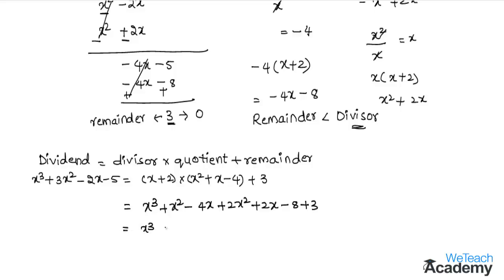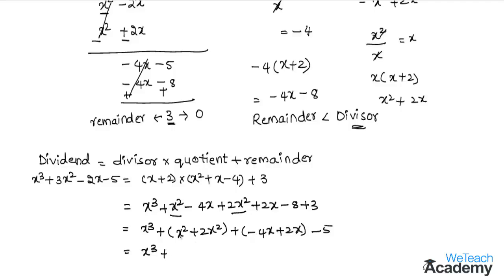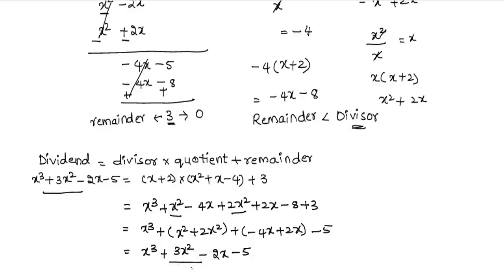Now let us group the like terms. We have only one x³ term, so we write x³. Grouping the x² terms: x² + 2x² = 3x². Grouping the x terms: -4x + 2x = -2x. And the constants: -8 + 3 = -5. So the result is x³ + 3x² - 2x - 5, which is exactly the dividend. The result is verified.